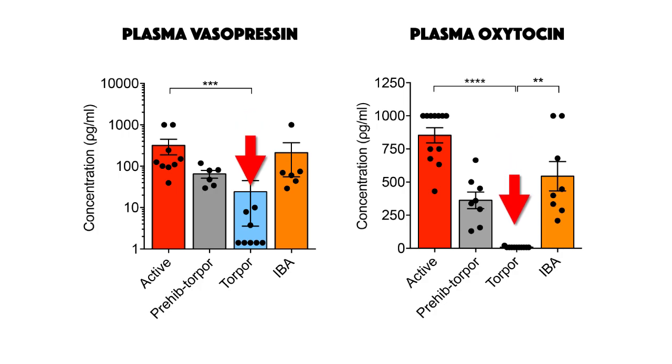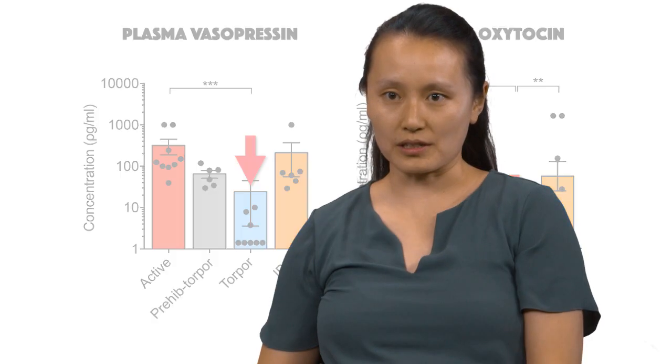During these transient active-like IBA bouts, their hormone levels increased back to active levels. So that says to us, these hormones are really important during hibernation, especially during these interbound arousal periods, perhaps to retain water so that they don't urinate too much water.